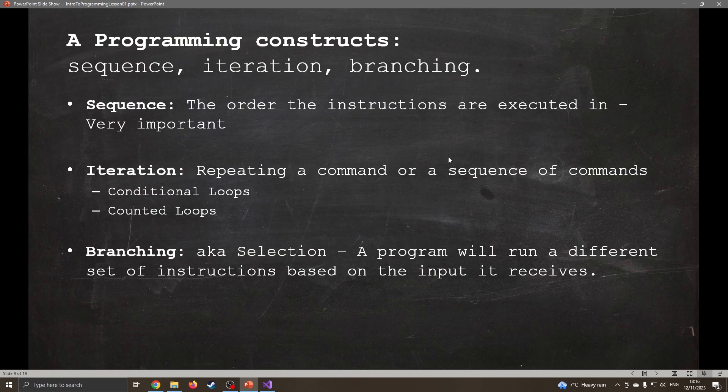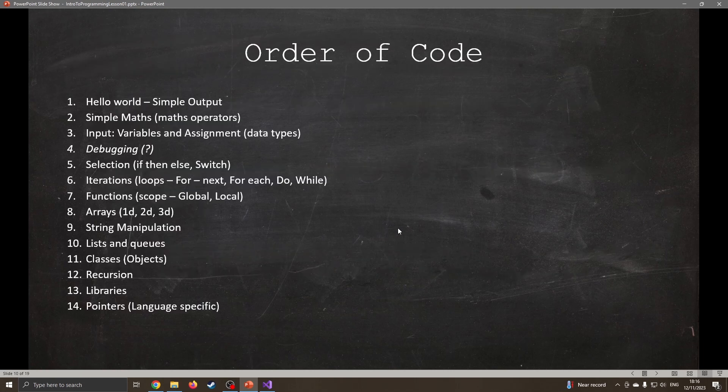When it comes down to it, our programming constructs are sequence, iteration, and branching. Sequence is the order in which the instructions are executed, it's really important that you work through the code in the order. Iteration, we can repeat things for a certain amount of times until something happens, or we can repeat for a fixed number. And then branching, a program runs a different set of instructions based on the input it receives.